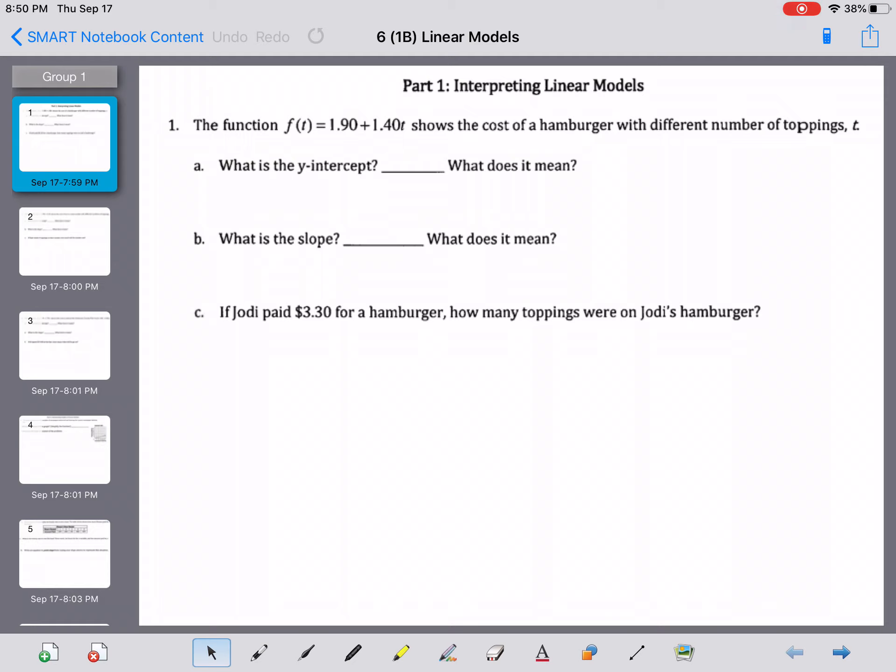The first question is, what is the y-intercept? When we're looking for the y-intercept, we're looking for the value that does not have a variable. So when we're looking at this particular equation, our value is going to be 1.90. That's going to be our y-intercept. And what this means is, it's how much the hamburger costs without any toppings. So to keep that a little bit shorter, we'll say it's the base cost of a hamburger.